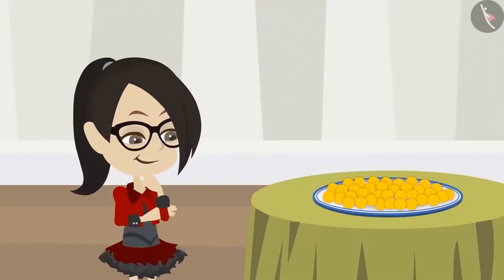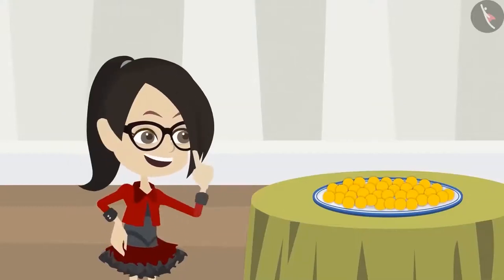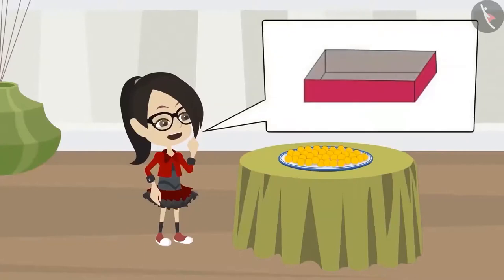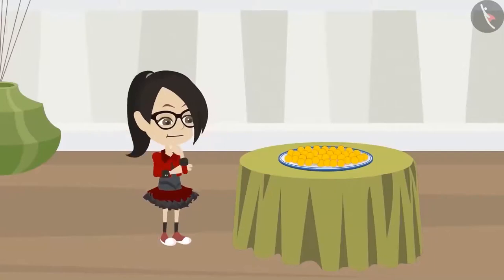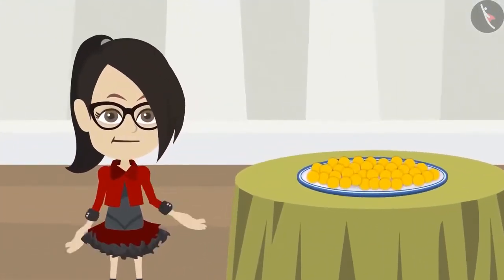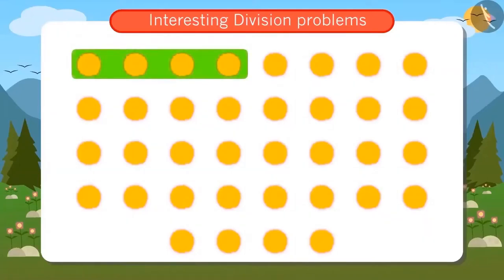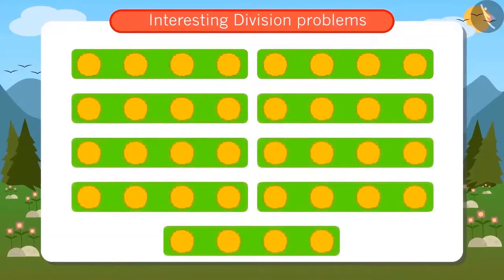Vandana looks at the Ladoos and comes up with an idea. I know that four Ladoos will fit in a box. I will try to make groups of four Ladoos. I put these four Ladoos in a group. Out of the remaining Ladoos, let me put four Ladoos in the next group. In the same way, I make groups of four from the remaining Ladoos. Now I count these groups. There are nine total groups. That means I have to buy nine boxes.